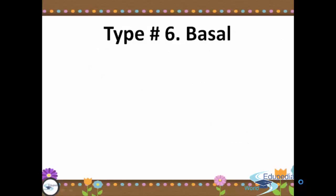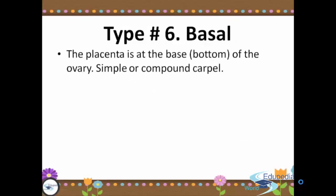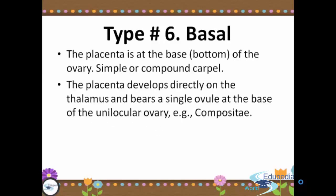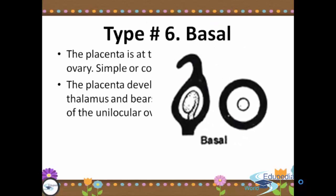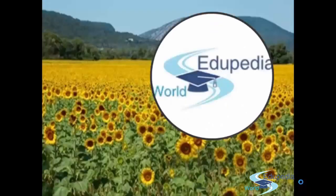The sixth type of placentation is basal. The placenta is at the base or bottom of the ovary in simple or compound carpal. The placenta develops directly on the thalamus with a very single ovule at the base of the unilocular ovary. Here we have the picture of basal placentation.